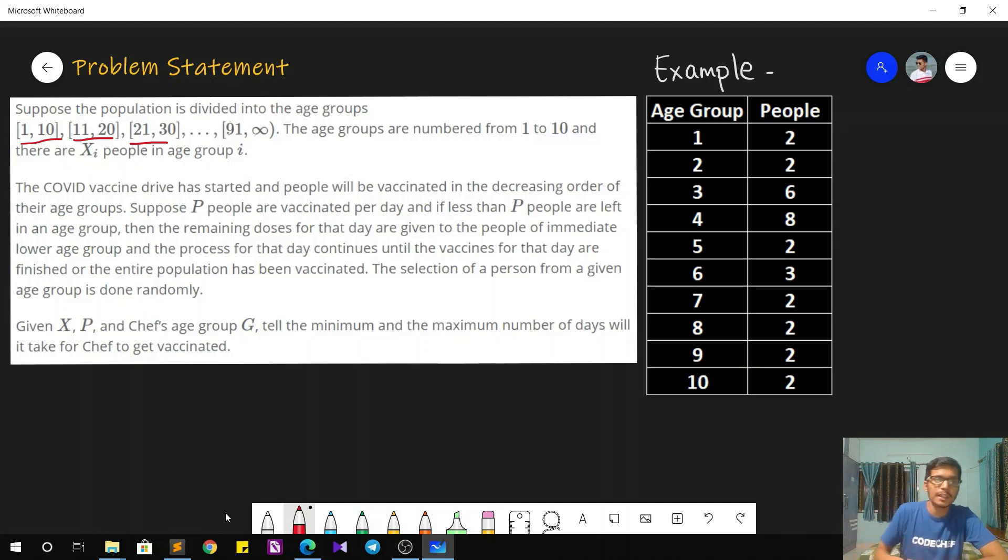The covid vaccine drive has started and vaccination is going to take place but in the decreasing order of the age groups. So first the age group 10 will be vaccinated then age group 9, 8 and so on in the decreasing order. Also it is given that at max P people can be vaccinated per day. And it is also given that chef is present in age group G. So what do we have to tell? We have to find out the minimum and maximum number of days it will take for chef to get vaccinated.